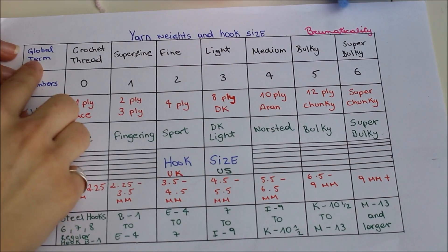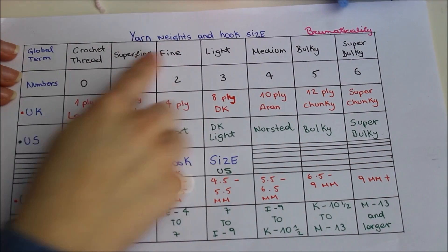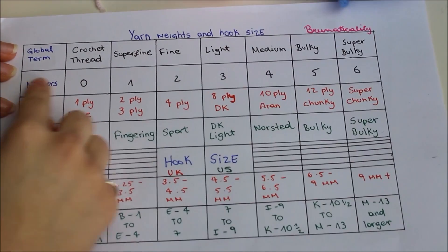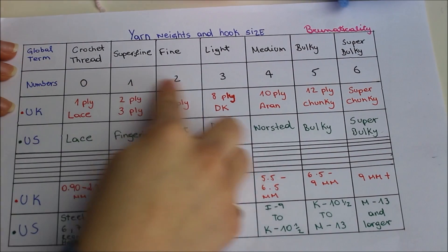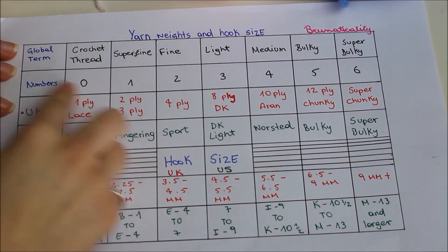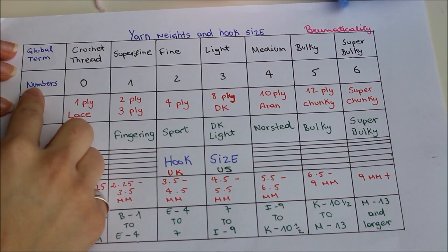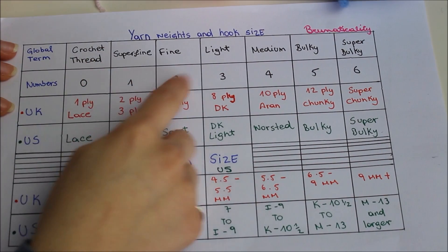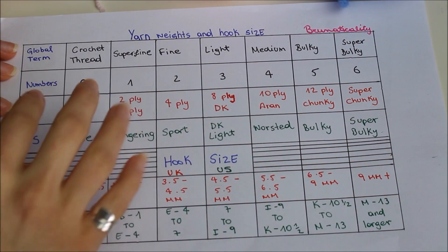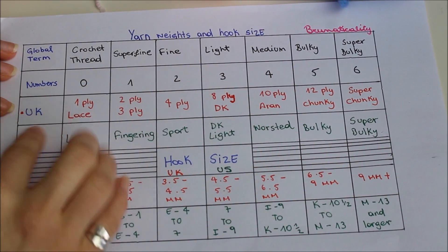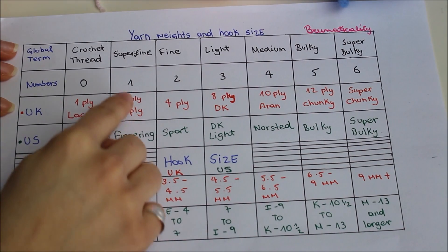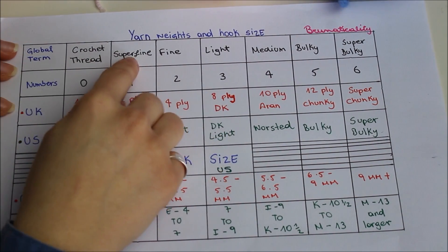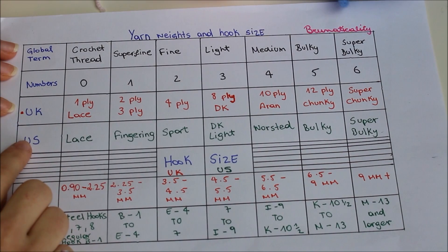The most used terms for yarn weights are the global terms and also the numbers. I prefer using the numbers, so every time I say yarn weight number 0, 1, 2, 3, 4, 5, or 6, you can just go back to the table and check — whether that's the global terms, or the UK or the US equivalent.